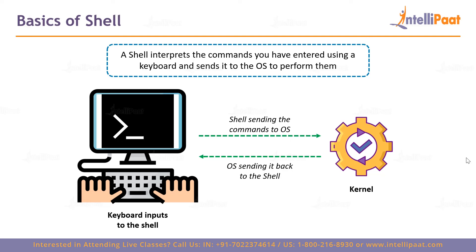A shell interprets the commands you enter using a keyboard and sends them to the operating system to perform. Both shell and kernel are programs running on the operating system. Kernel communicates with the hardware; shell is the interface between the kernel and the user. Shell interprets what you're trying to say, translates it, and sends it to the kernel. The kernel uses hardware to complete the operations and sends results back to the shell so you can view them on your monitor.